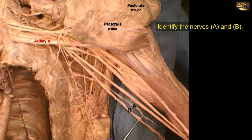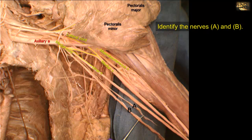This is the lateral cord of the brachial plexus, lateral to the axillary artery. The lateral cord has three branches: the lateral pectoral nerve and its two large terminal branches, the medial root of the median nerve and the musculocutaneous nerve. Here is the medial cord of the brachial plexus with its two large terminal branches: the medial root of the median nerve, which joins the lateral root to form the median nerve, and the ulnar nerve. You can see the capital M configuration that helps sort out the branches of the lateral and medial cords.